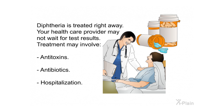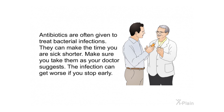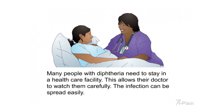Diphtheria is treated right away — your health care provider may not wait for test results. Treatment may involve antitoxins, antibiotics, and hospitalization. The bacteria that cause diphtheria release a toxin, and antitoxins are medicines used to fight toxins in the body. The antitoxin may be injected into a vein or muscle to stop the toxin from moving through your body. Antibiotics are often given to treat the bacterial infection and can shorten the duration of illness — make sure to take them as your doctor suggests, as stopping early can worsen the infection. Many people with diphtheria need to stay in a health care facility so their doctor can watch them carefully, since the infection can spread easily.